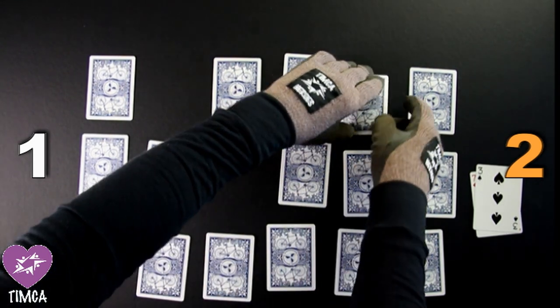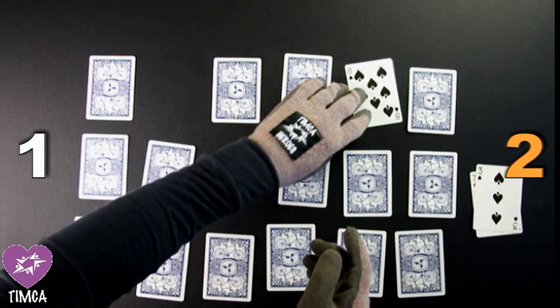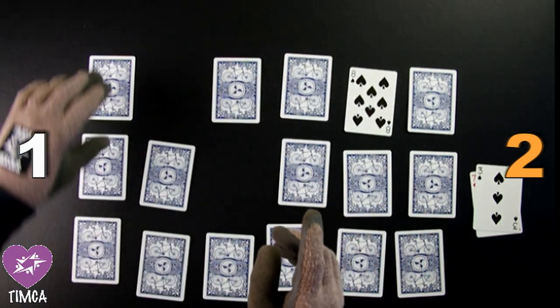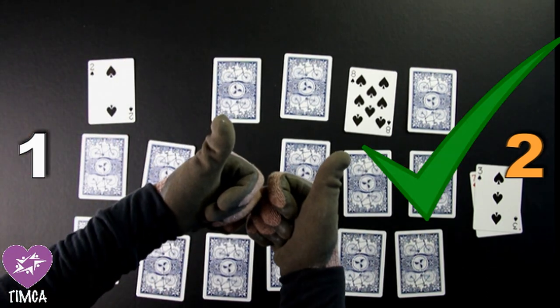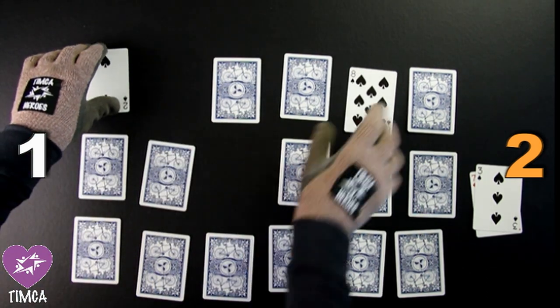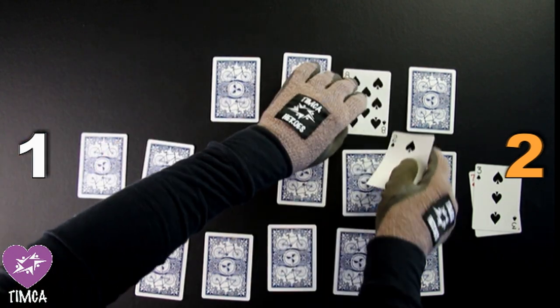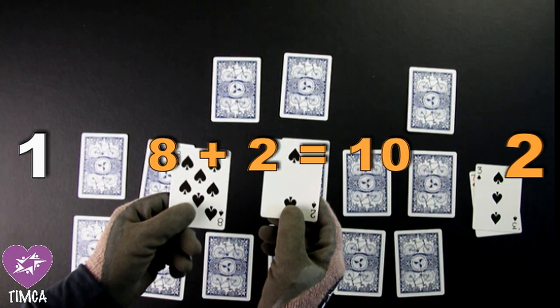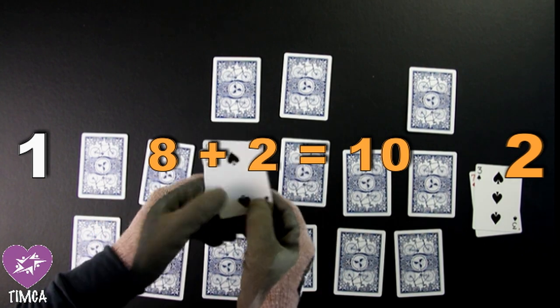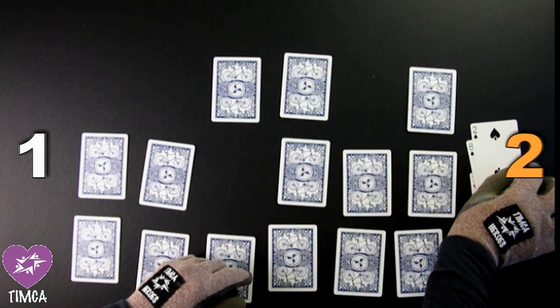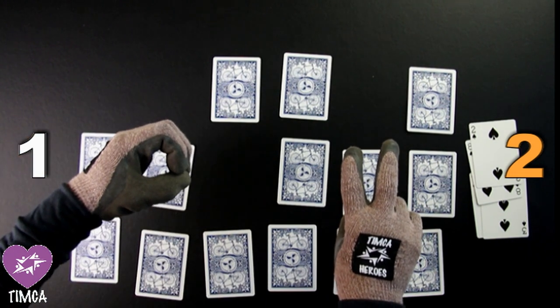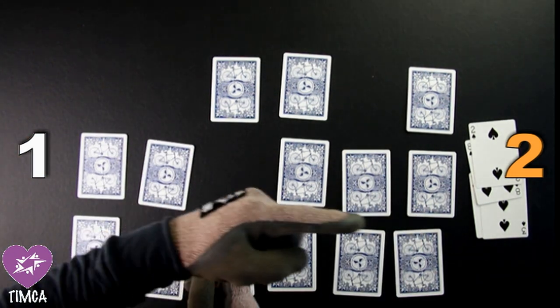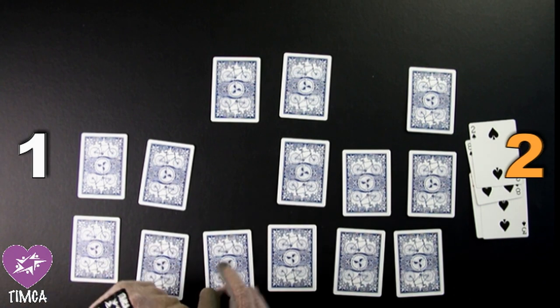Player 2 turns up an 8. Can they find the matching 2? Yes, Player 2 remembers where the 2 is and can make a bond of 10. As we know, 8 plus 2 is a bond of 10. They set aside that pair of cards and now lead the game 2 to 0.